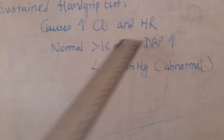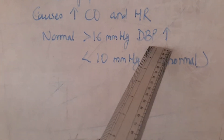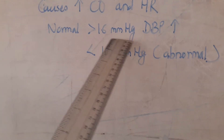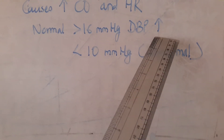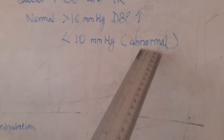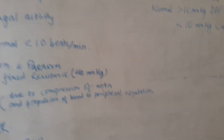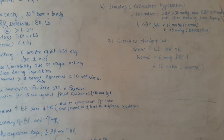The sustained hand grip test causes an increase in cardiac output and heart rate, resulting in increased blood pressure. The diastolic blood pressure increase is specifically measured: more than 16 mmHg increase is normal, while less than 10 mmHg is abnormal. These are the various tests to assess the autonomic nervous system, most commonly used in conditions such as diabetes mellitus and other conditions involving the autonomic nervous system.